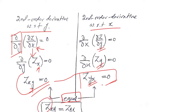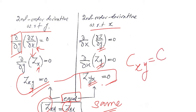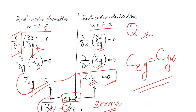This verifies Young's theorem: differentiating z with respect to x then y gives the same result as differentiating with respect to y then x. Young's theorem is applied in economic situations — for example, a cost function differentiated with respect to x then y should equal the cost function differentiated with respect to y then x. Similarly, the output or production function Q differentiated with respect to labor then capital should equal differentiation with respect to capital then labor. Young's theorem holds in economic situations.